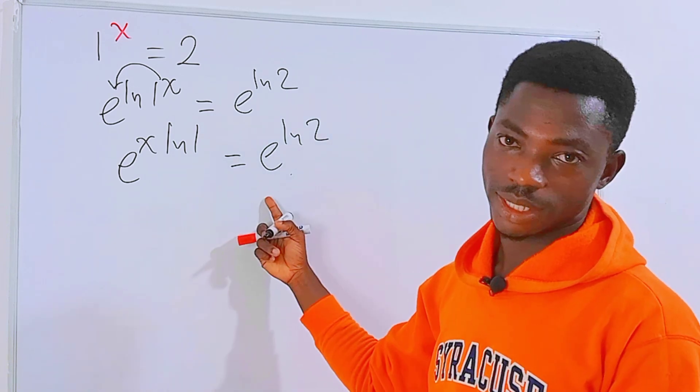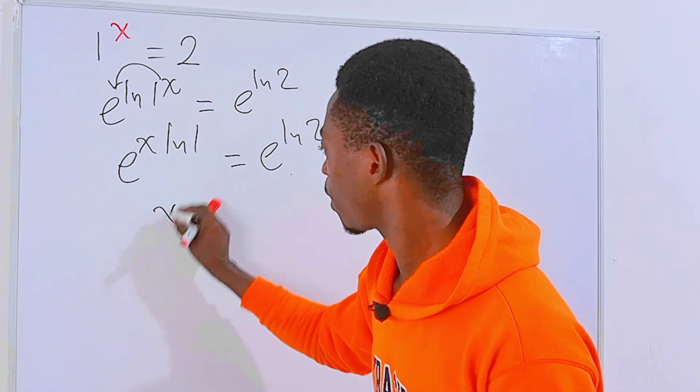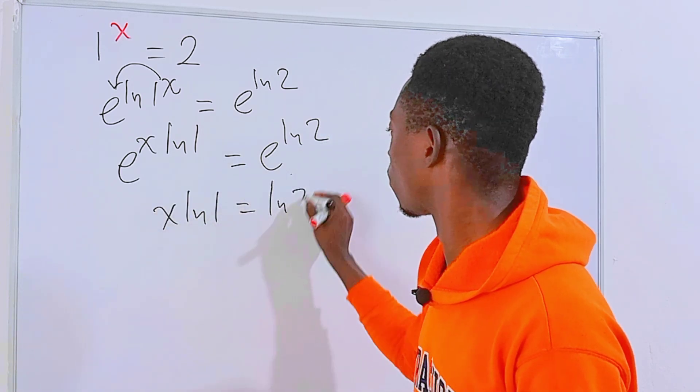Now the bases are the same so we can equate their exponents. So we have x ln of 1 equals ln of 2.